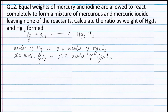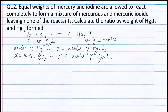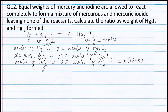In this case, weight of iodine taking part in the reaction is W minus x grams. Therefore moles of iodine will be W minus x divided by 254. And moles of Hg₂I₂ equals moles of iodine, so moles of Hg₂I₂ equals W minus x divided by 254. Therefore moles of mercury equals 2 into moles of iodine, which equals 2 into (W minus x) divided by 254.